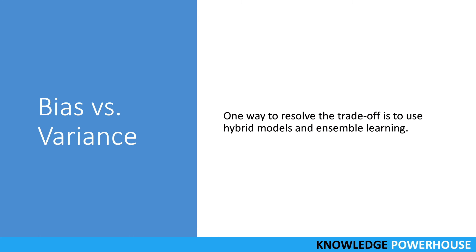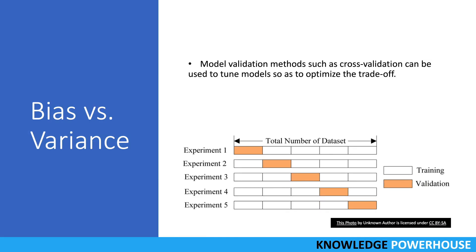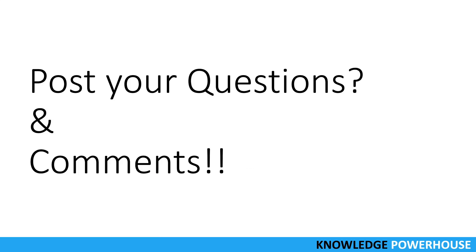Similarly, the bagging technique combines strong learners in a way that reduces their variance. We have another session on bagging and boosting in our playlist that covers these topics in detail. Another method for addressing the bias-variance trade-off is cross-validation, where we create training and validation data sets and run multiple experiments so that data is trained on one set and validated on the next. This helps us find the right set of hyperparameters to balance bias and variance.